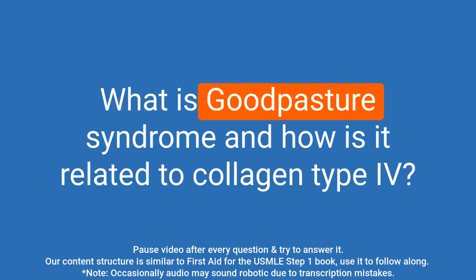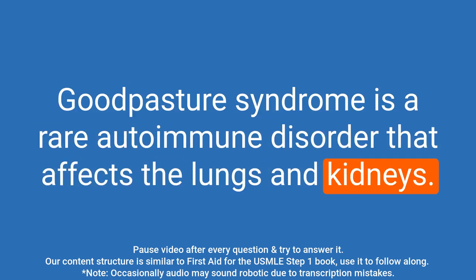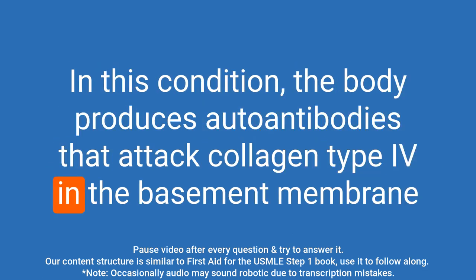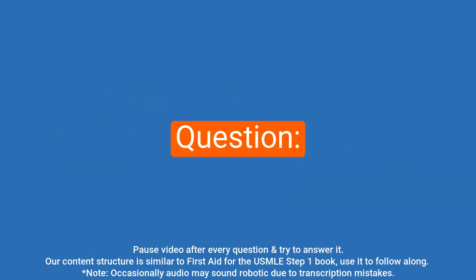Question: What is Goodpasture syndrome and how is it related to collagen type IV? Answer: Goodpasture syndrome is a rare autoimmune disorder that affects the lungs and kidneys. In this condition, the body produces autoantibodies that attack collagen type IV in the basement membrane of the lung and kidney, leading to inflammation and damage to these organs.